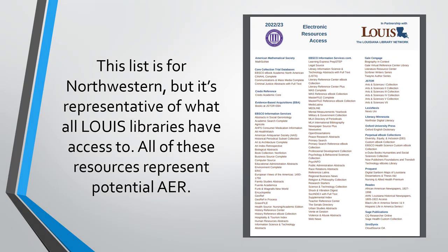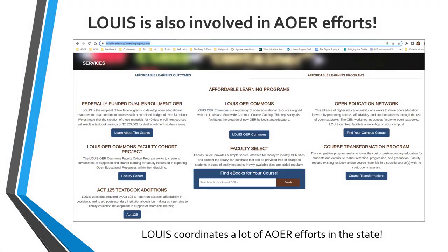The list shown here on the screen is for Northwestern, but it's representative of what all Lewis libraries have access to. All of these resources represent potential AER. This is a screen grab from the Lewis Affordable Learning Louisiana website that provides an overview of what Lewis is currently engaged with in terms of AOER. Lewis coordinates a lot of AOER efforts in the state.